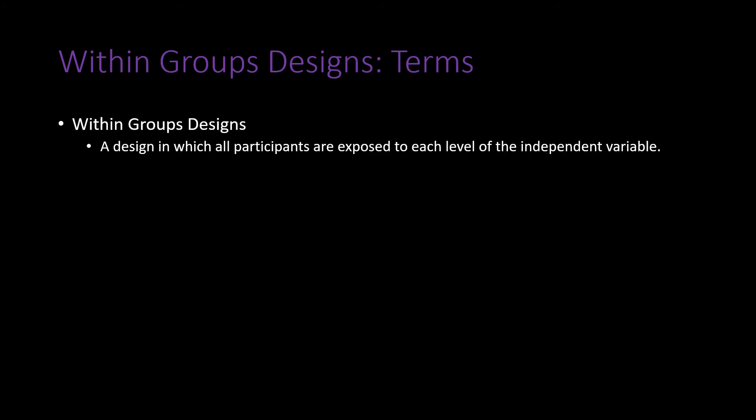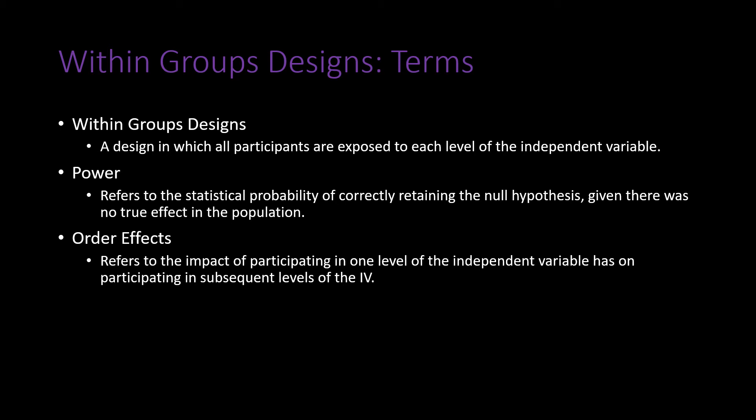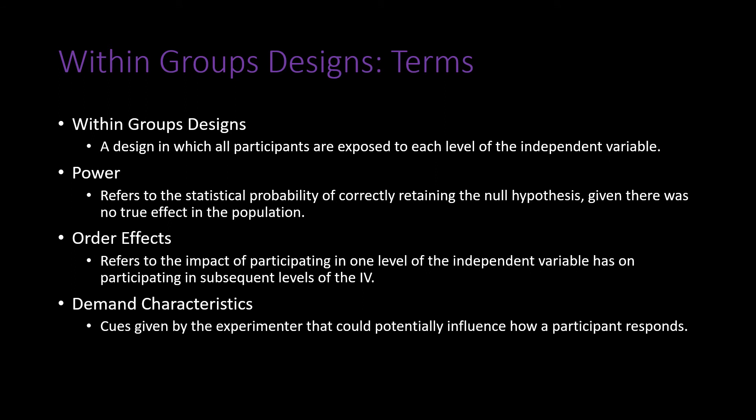Within groups designs are designs in which all participants are exposed to each and all levels of the independent variable. Power is a statistical term referring to the probability of correctly rejecting the null hypothesis given that there was a true effect in the population. Order effects refer to the impact that participating in one level of an independent variable has on participation in subsequent levels. Demand characteristics are cues given off by the experimenter or the experimental context itself that could potentially influence how participants respond.